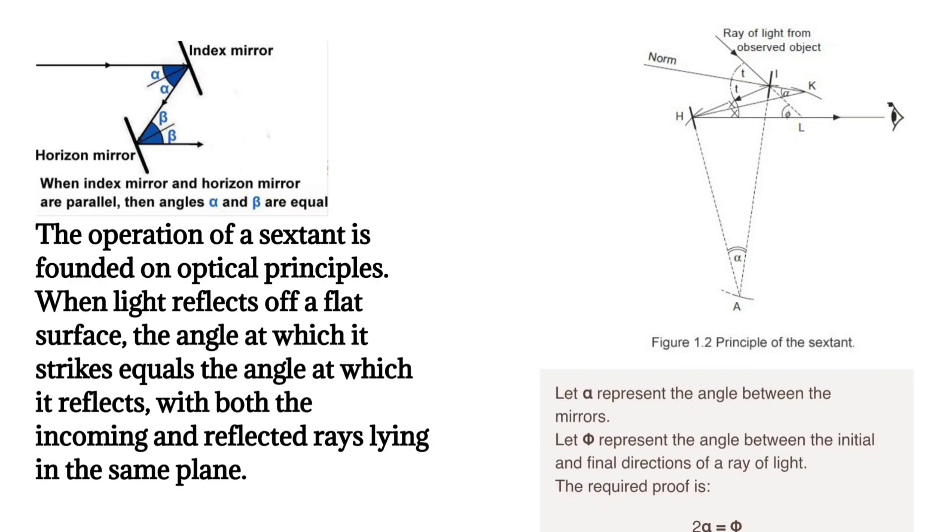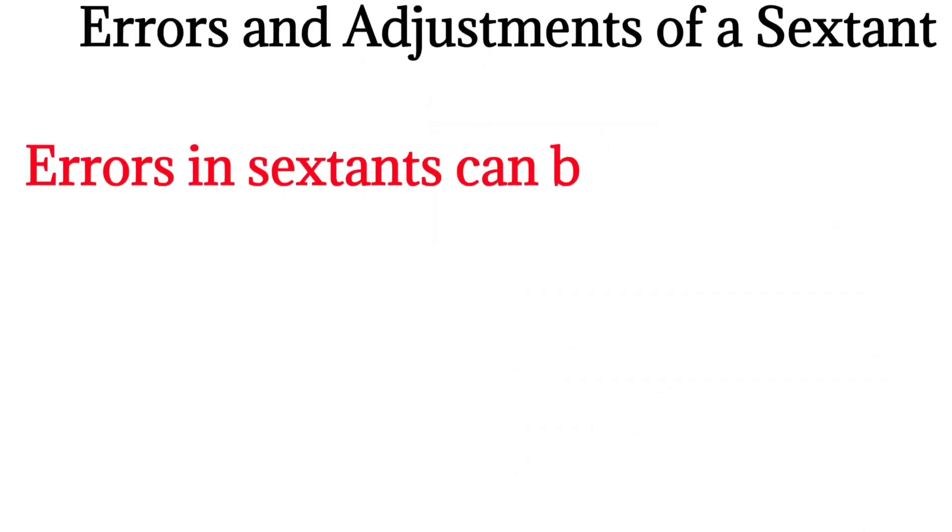Errors and adjustments of a sextant. Errors in sextants can be categorized into two types: adjustable and non-adjustable.